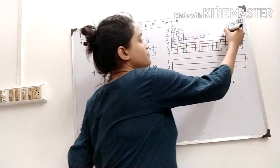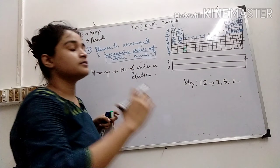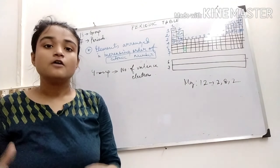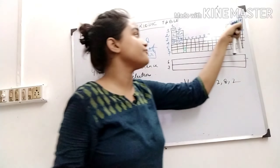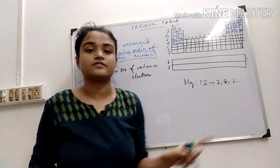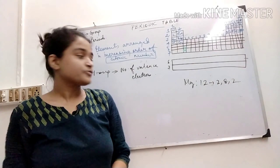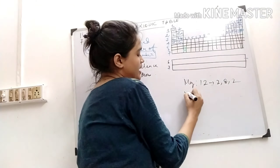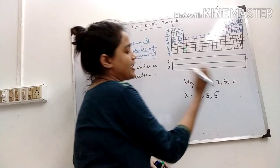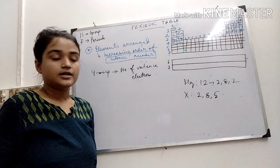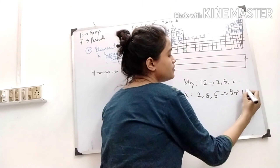But after group 2, if the valence electron is 3, 4, 5, they are placed in groups 13, 14, 15, 16, 17, like that. So if element X has electronic configuration like 2, 8, 5, this is group 15.